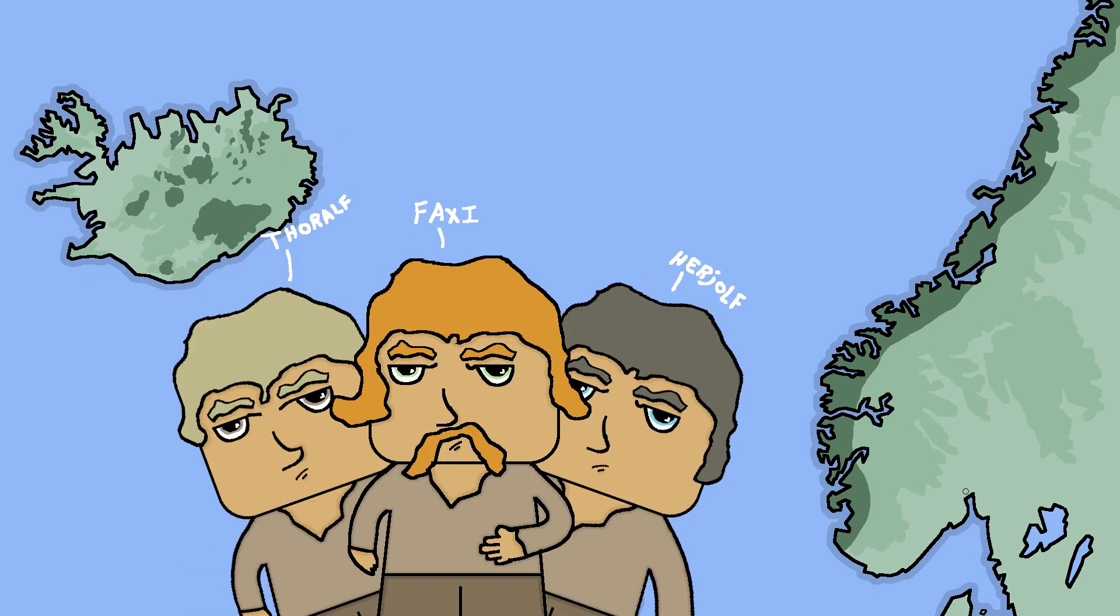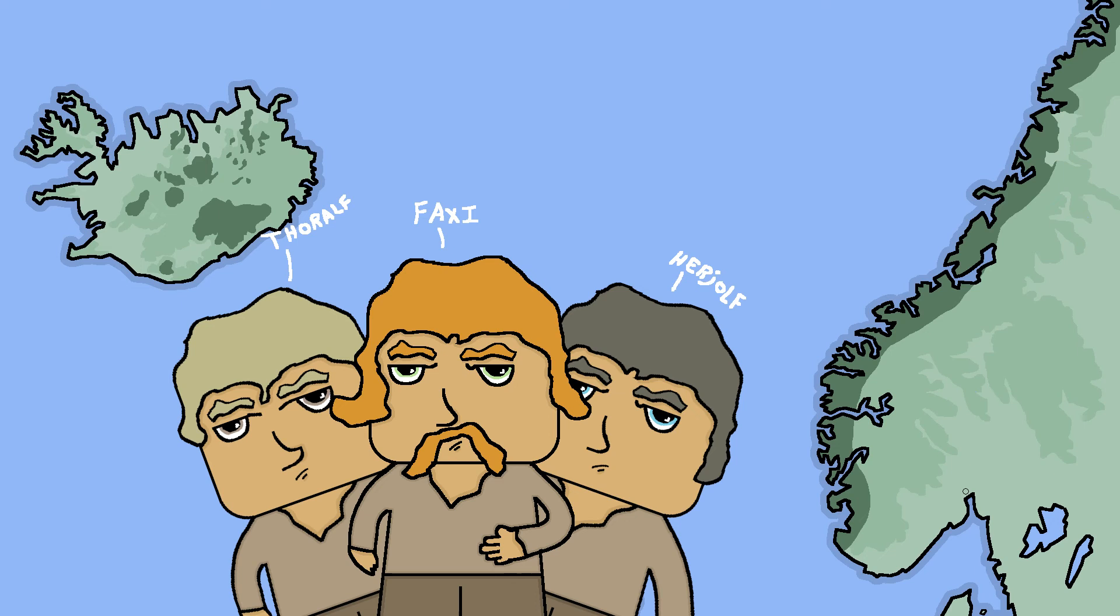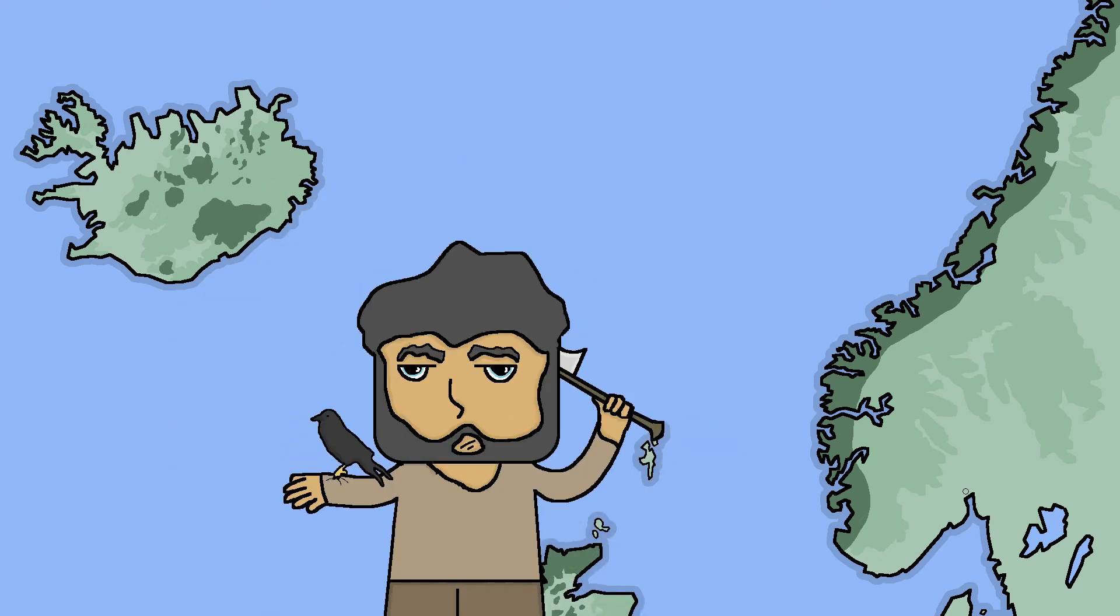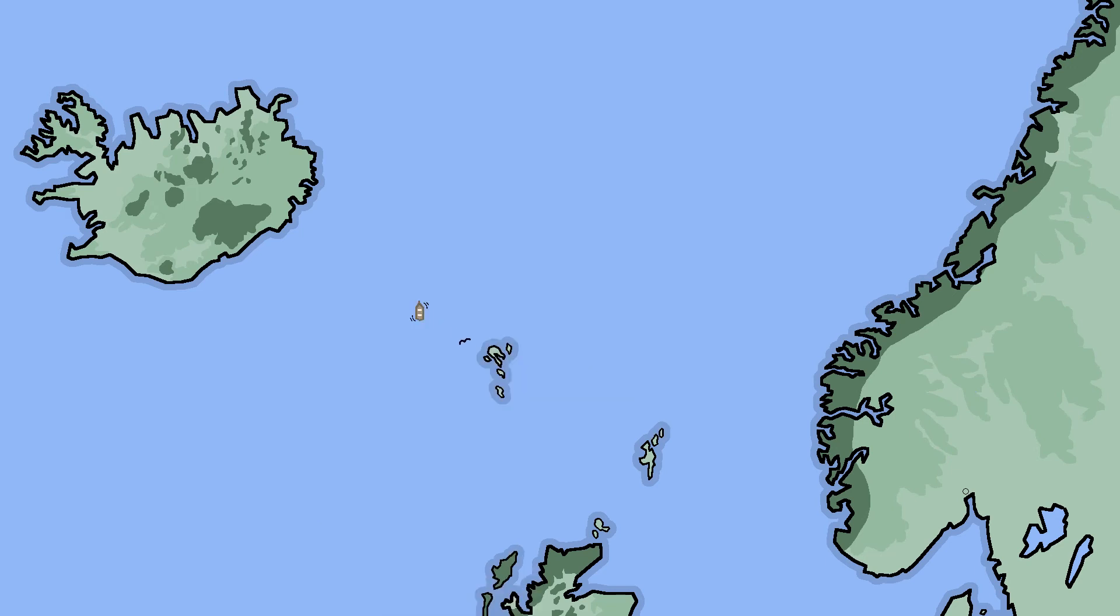With him were also three men: Thorolf, Herjolf, and Faxi. Floki took three ravens with him to sea to help find a way to the island. The first raven flew south, back to where they came from. The second raven returned back to the ship without pause.